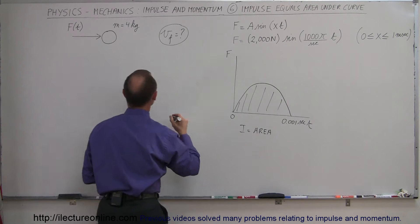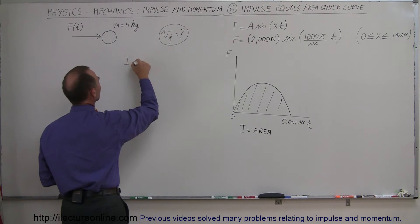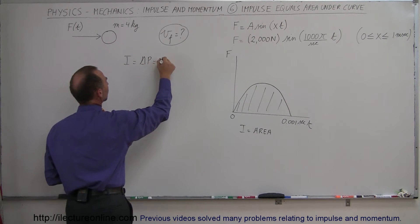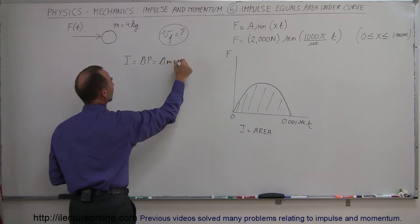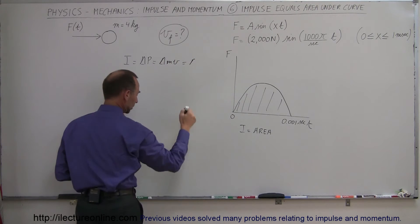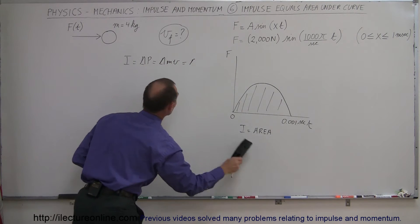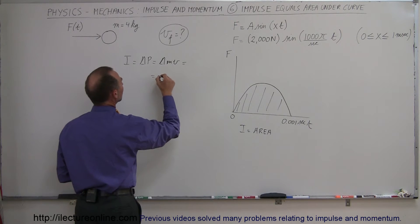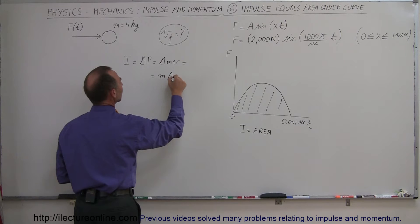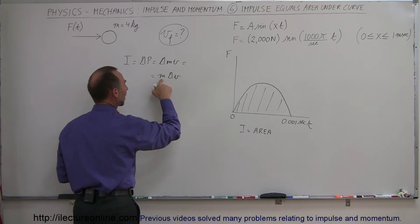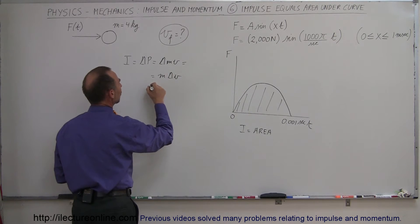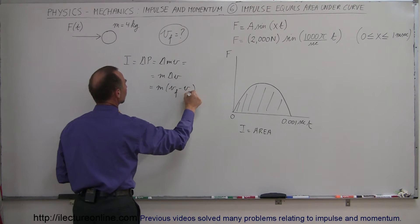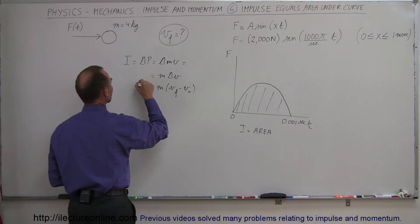Impulse is equal to the area underneath this curve, and we also know that the impulse is equal to the change in momentum, which equals the change in mass times velocity — which equals the mass times the change in velocity, because the mass doesn't change, only the velocity changes. This equals mass times v final minus v initial, and that is equal to the impulse.